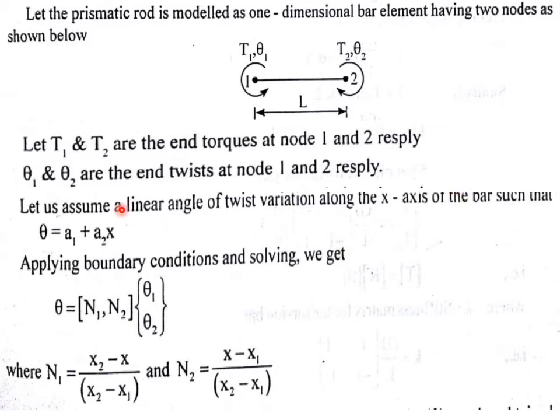Let us assume a linear angle of twist variation along the x-axis of the bar such that theta is equal to a1 plus a2 x. We apply the boundary conditions and by solving we get theta is equal to n1 n2 theta 1 theta 2, where n1 is equal to x2 minus x divided by x2 minus x1, and n2 is equal to x minus x1 divided by x2 minus x1.